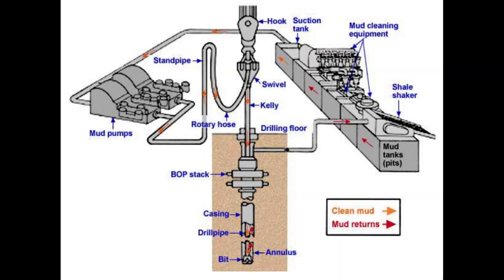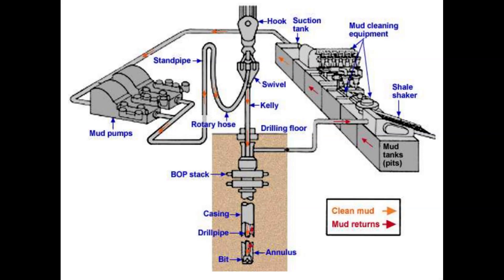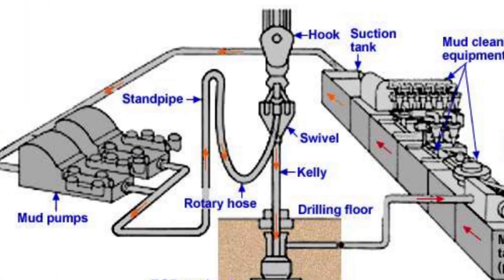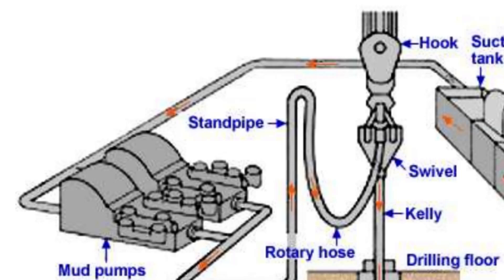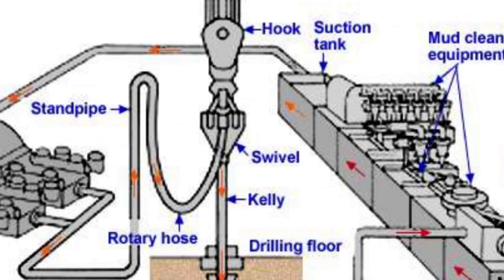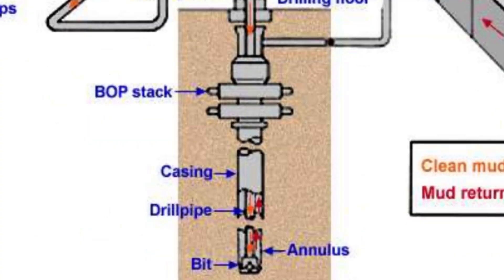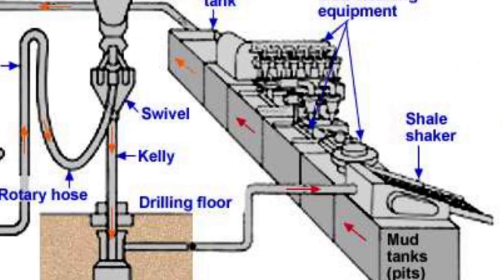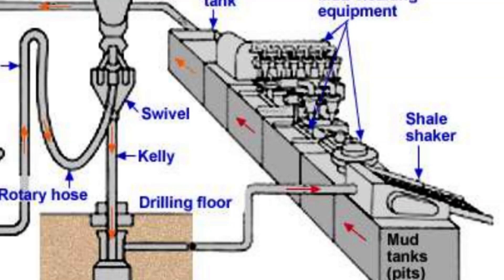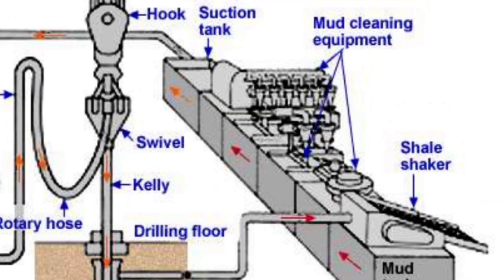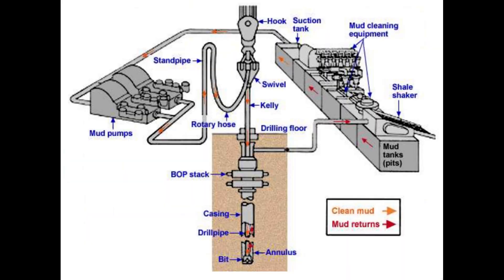The circulation system consists of several components, such as mud pits, mud pumps, standpipe, kelly hose, swivel, kelly, drill pipe, bit, annulus, flowline, shale shakers, desander, desilter, degasser, and mud tanks. Let's take a look at each of them in more detail.